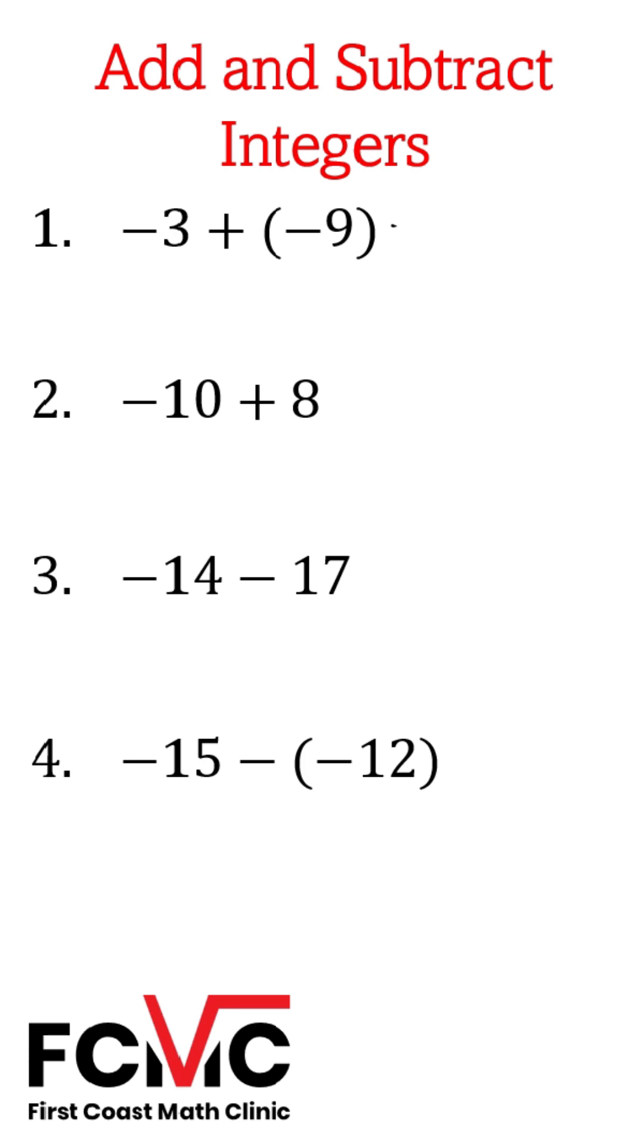When we're adding negative 3 plus negative 9, when we're adding two numbers of the same sign, we want to keep the sign and add the numbers. 3 plus 9 is 12, and we're going to keep our negative sign. So our answer is going to be negative 12 for number 1.